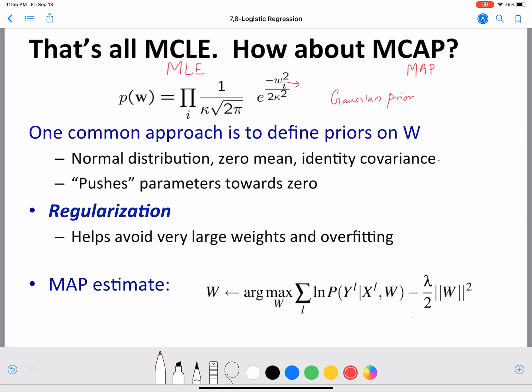Now just reminding you what we did for MCLE, we had a conditional log likelihood term. So this is the conditional log likelihood term. And now to that we have an additional term. This term is coming from the prior. So the Gaussian prior, the main function that has W has this form. Has e raised to minus W_i square by 2κ square.